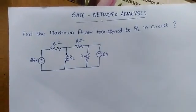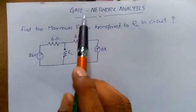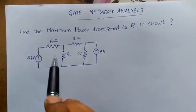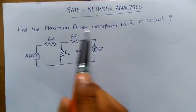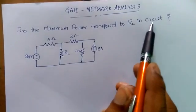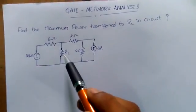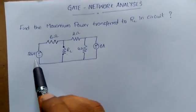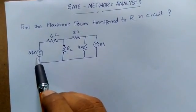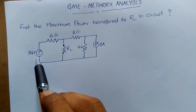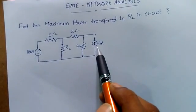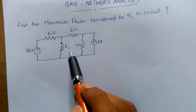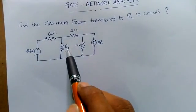Good morning, one and all. You can see these types of questions in GATE, especially in the network analysis subject. The question is: find the maximum power transferred to RL in the circuit. Here you can see the RL circuit — an RL resistance — and two sources: one is a 24 volts voltage source and another is a 6 amperes current source. Because of these two sources, what is the maximum power transferred to RL?